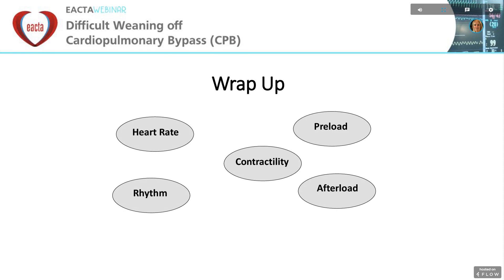Slow heart rate will need to be made faster by pacing or with atropine. Poor rhythms such as fast AF compromising cardiac output will need to be reversed. An empty right heart would need to be gently filled. Vasoplegia would need vasoconstrictors, and poor contractility will need inotropes. In addition, there are other non-cardiac specific variables such as optimizing blood gas analysis results and optimal temperature.